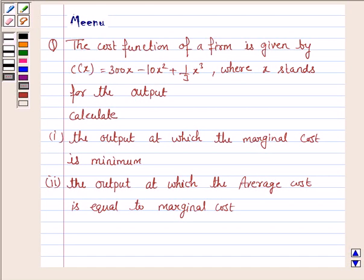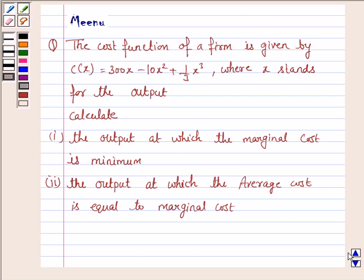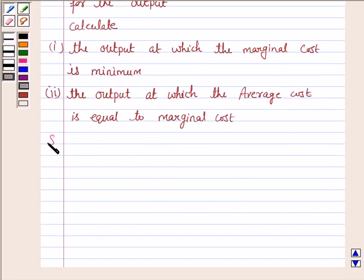Hello and welcome to the session. Let's discuss the following question. The cost function of a firm is given by c(x) = 300x − 10x² + (1/3)x³, where x stands for the output. Calculate the output at which marginal cost is minimum, and the output at which average cost is equal to the marginal cost.